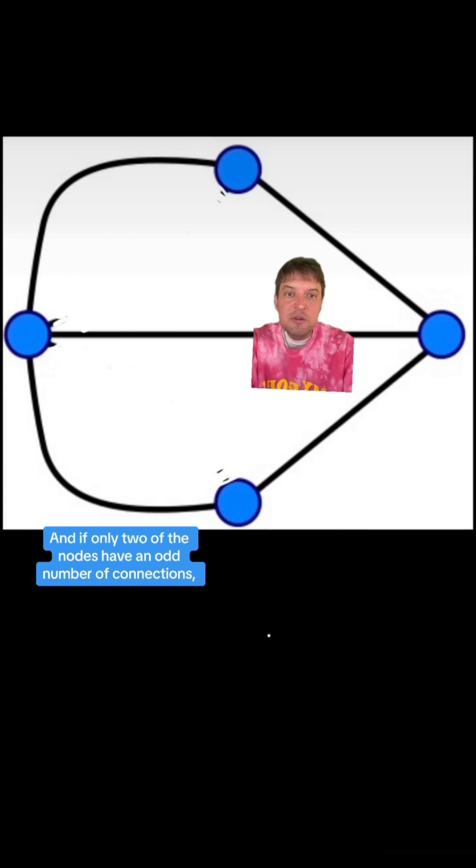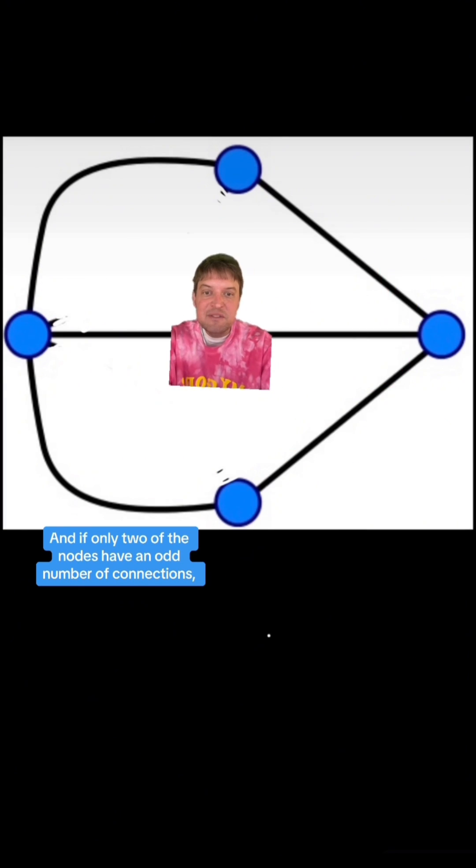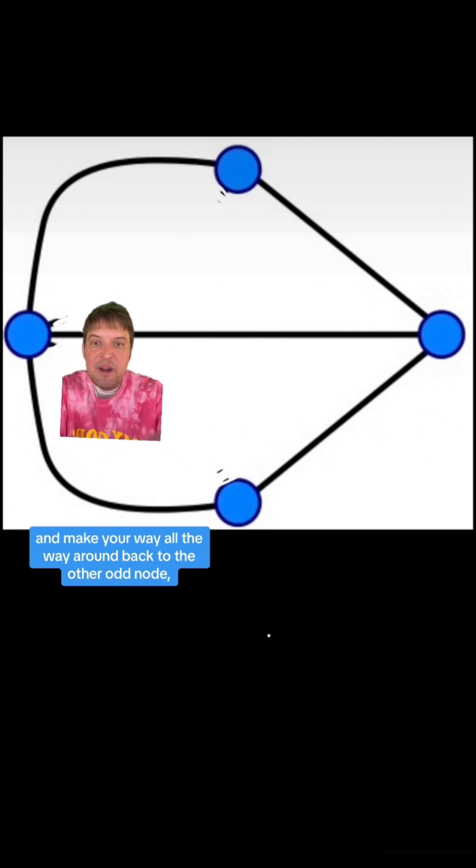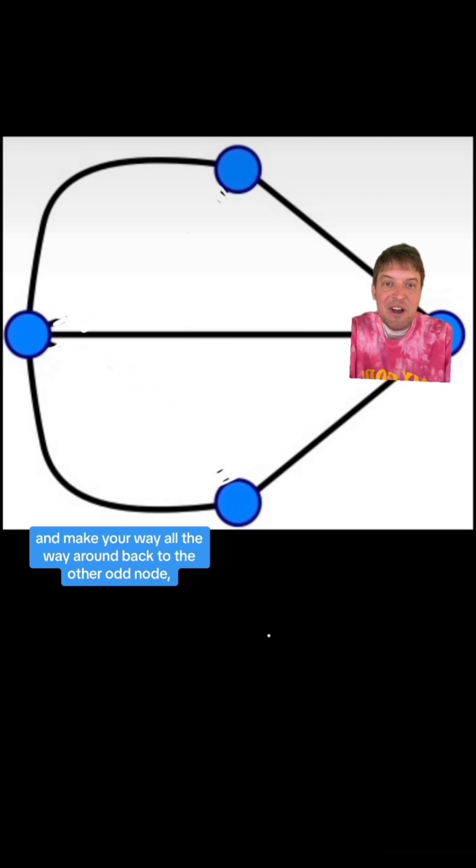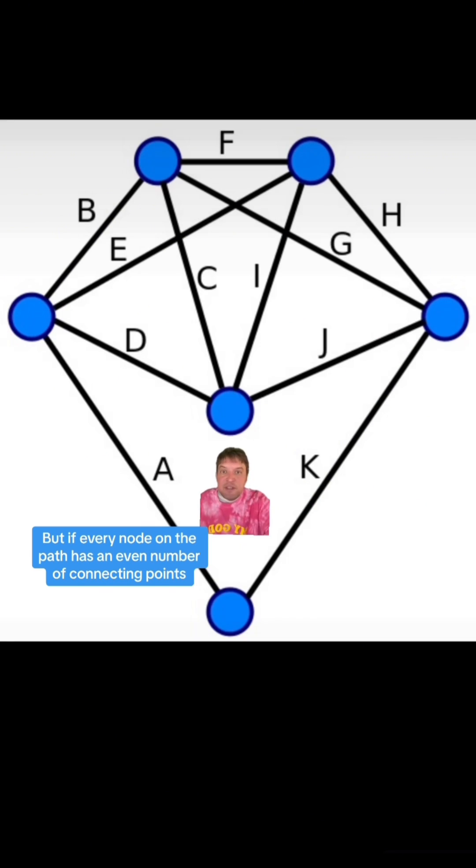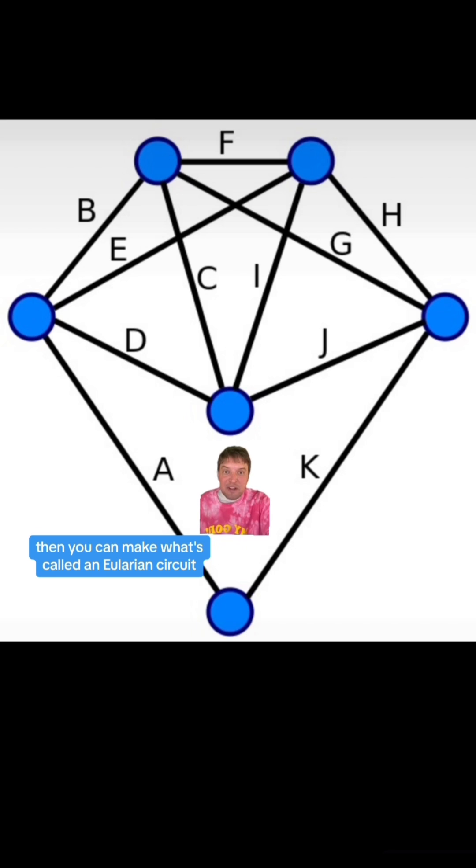And if only two of the nodes have an odd number of connections, then you can start on one odd node and make your way all the way around back to the other odd node, and that's called an Eulerian path. But if every node on the path has an even number of connecting points, then you can make what's called an Eulerian circuit by hitting every node and every path and returning to your starting point.